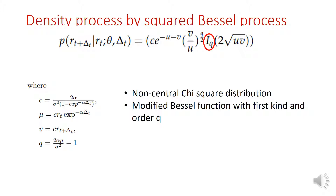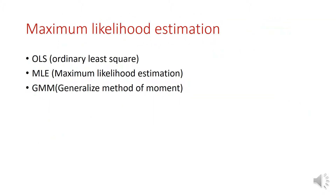To obtain the maximum likelihood estimation, we first derive the density function of the CIR model. This is the probability density function, which follows the non-central chi-squared distribution. You don't need to get into many details of the density function — we assume it is given. Moving on to maximum likelihood estimation: many of you may have heard of OLS and GMM, but in this presentation I will focus on maximum likelihood estimation, or MLE.